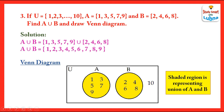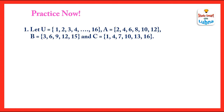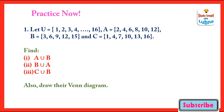I hope you now know how to draw the Venn diagram after looking at these three examples. Now let's start the quiz. The universal set has elements 1 through 16. Set A has elements 2, 4, 6, 8, 10, 12. Set B has elements 3, 6, 9, 12, 15. Set C has elements 1, 4, 7, 10, 13, and 16. You have to find A union B, B union A, and C union B, then draw their Venn diagrams. Good luck and thank you!